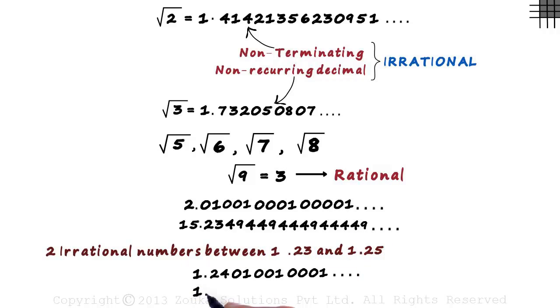Again, let's write 1.24 and this time we write 02, 002, 0002 and so on after it. That's your second irrational number.